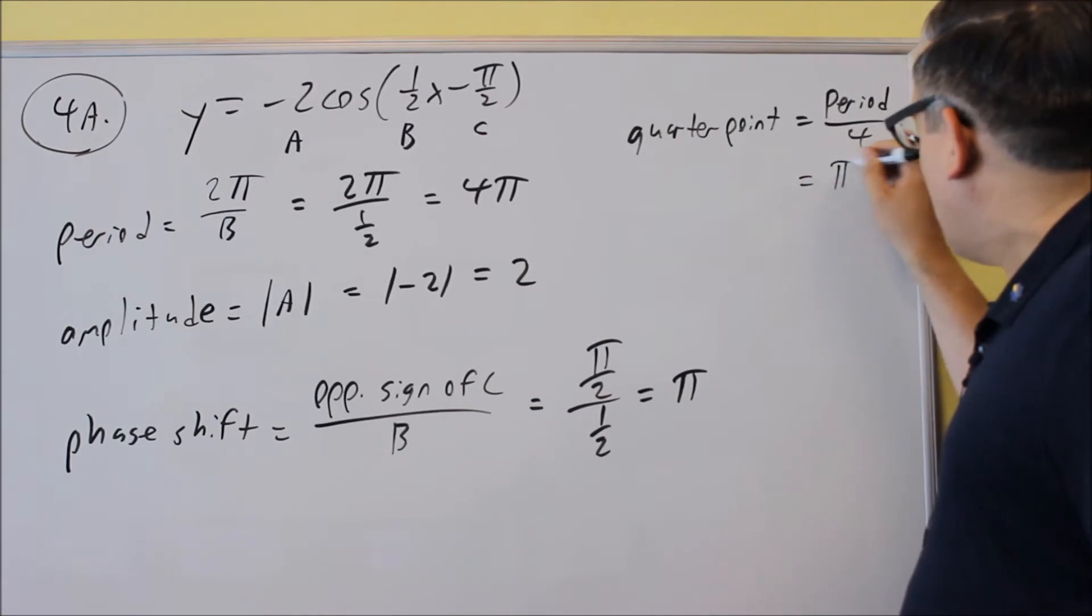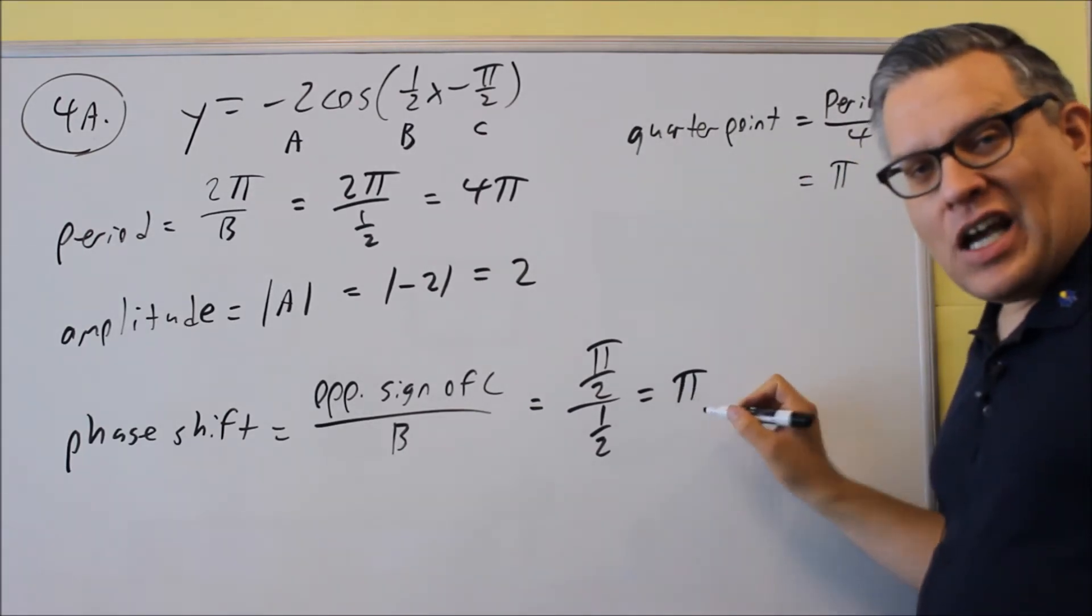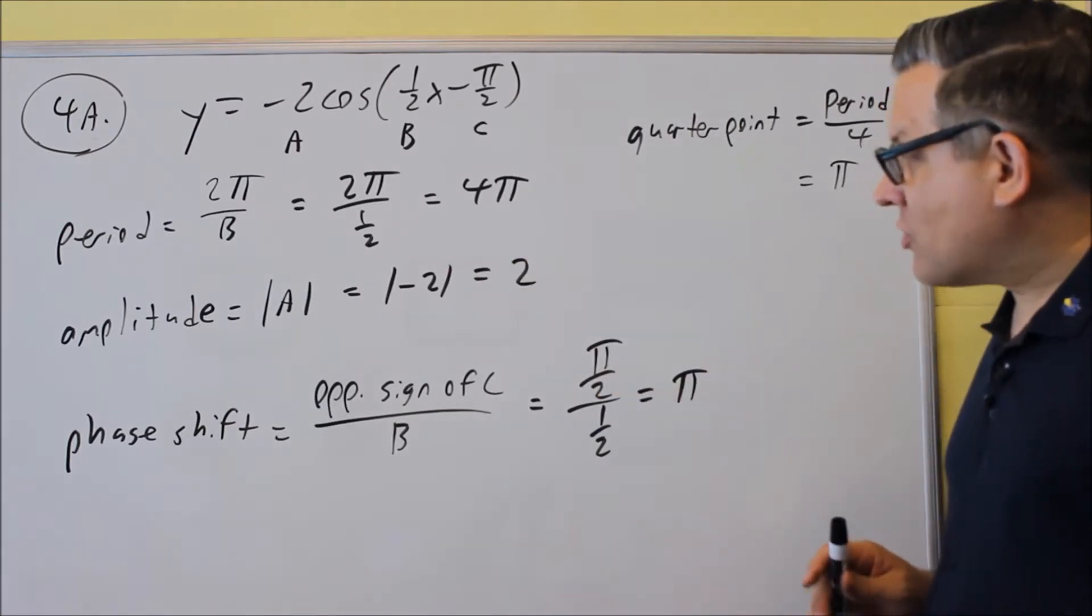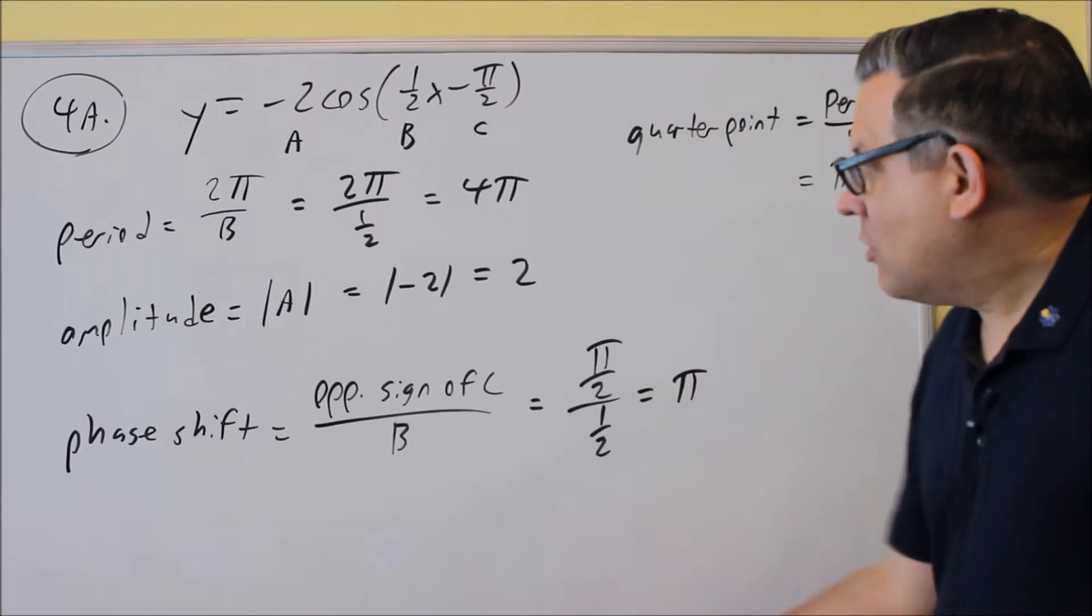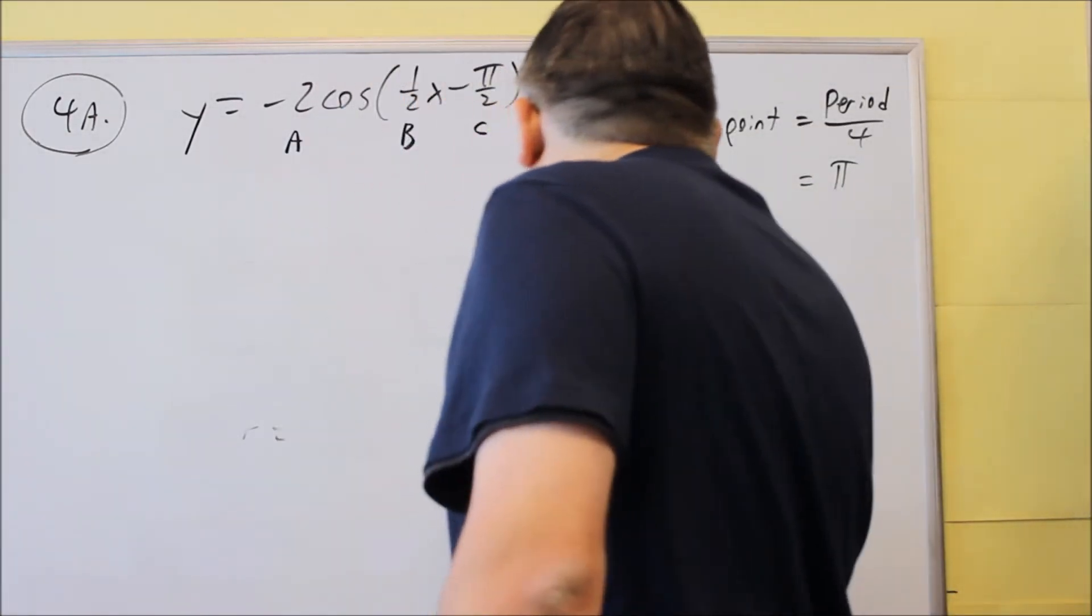In other words, this problem is going to be π. So I'm starting the graph off at π, and just adding π every single time to get the other key points. Okay, so hopefully you have all that written down. I'm going to erase all this because now we're going to draw the graph.